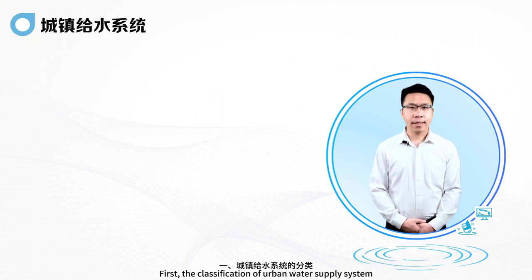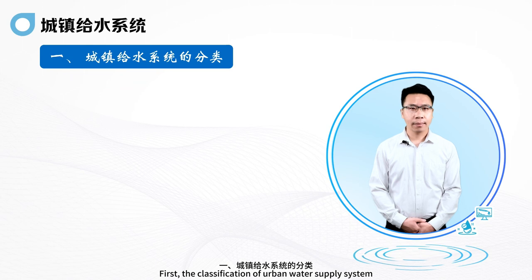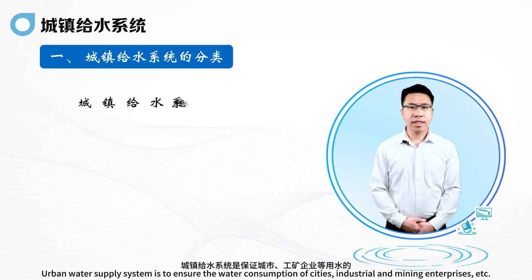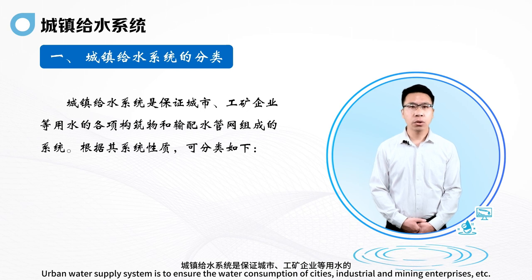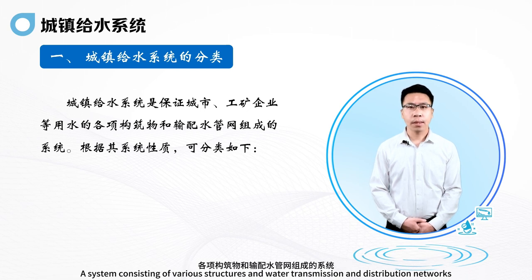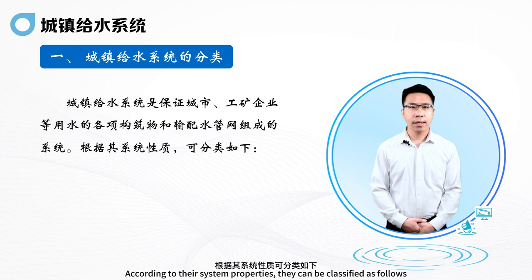First, the classification of Urban Water Supply System. The Urban Water Supply System is designed to ensure the water consumption of cities, industrial and mining enterprises, etc. It is a system consisting of various structures and water transmission and distribution networks. According to their system properties, they can be classified as follows.